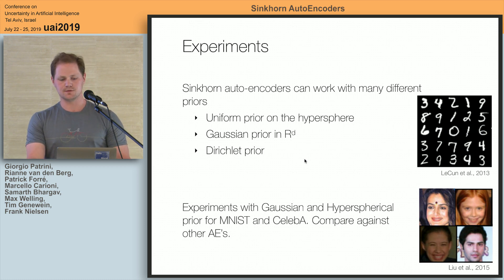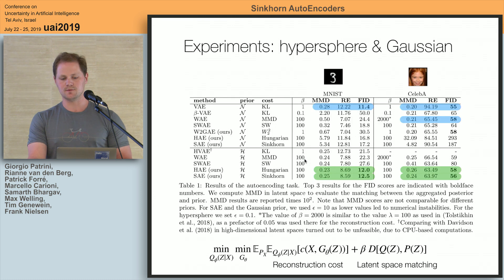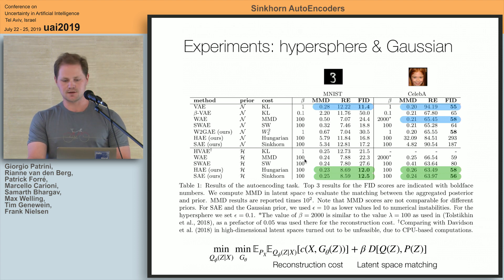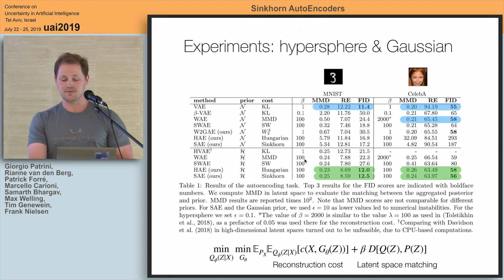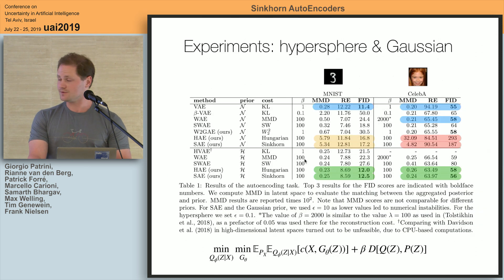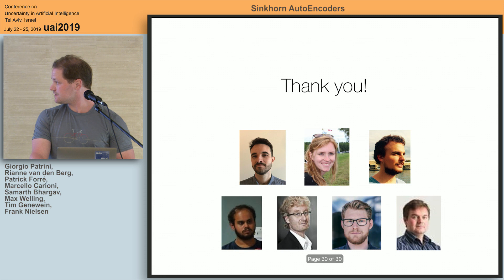We did experiments on MNIST and CelebA with a uniform prior on a hypersphere or Gaussian. On MNIST, we get a comparable FID score to VAE but lower reconstruction error. On CelebA, we get a very good FID score compared to other autoencoder methods. We also show extrapolations, interpolations, and samples. That was the Sinkhorn autoencoder. Thank you very much.